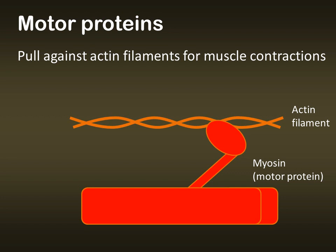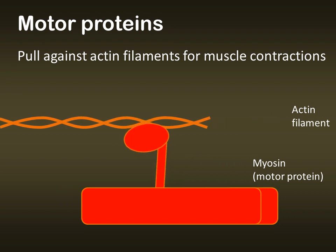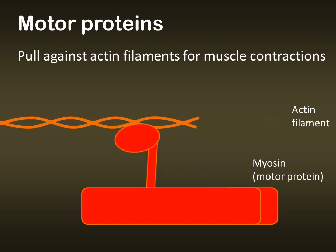With muscle contractions, the motor protein myosin is going to pull against an actin filament, a component of the cytoskeleton, as part of a muscle contraction. That happens collectively with thousands and thousands of these myosin and actin interactions within one cell to shorten the muscle cell.